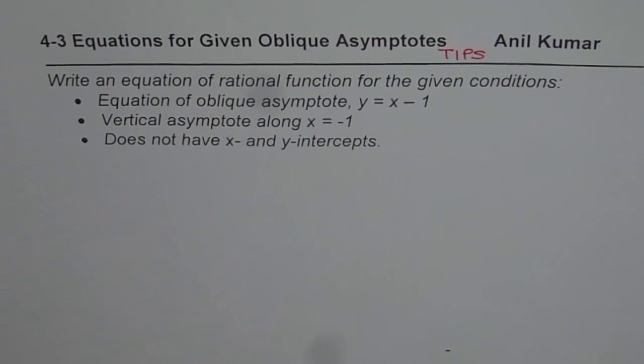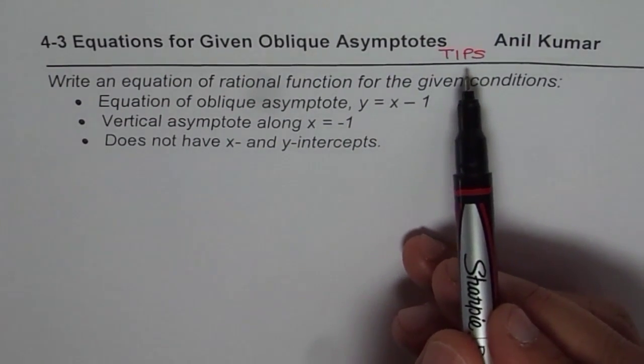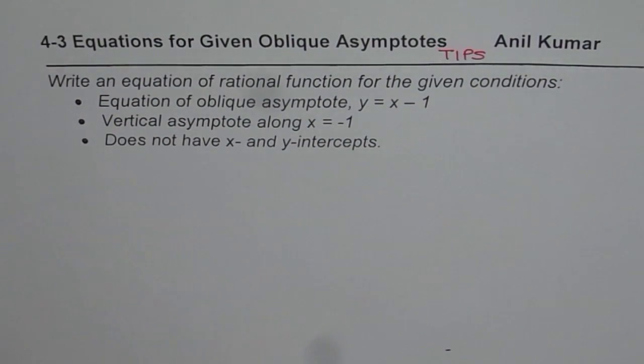I am Anil Kumar and here we have a thinking, information and problem solving question. You need to write an equation from the given information about oblique asymptote.